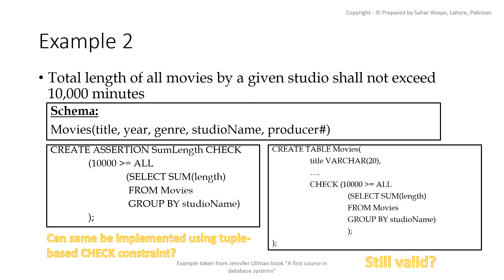However, you should understand that if the condition were reversed — for example, requiring 10,000 to be less than or equal to all studio totals — then deleting a tuple would cause the condition to become false, and the tuple-based check would not fire on delete, so the constraint would not be enforced accurately. We need to carefully determine which constraints should be implemented using assertions, attribute-level checks, tuple-level checks, or triggers.